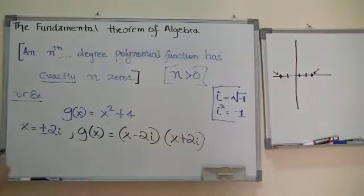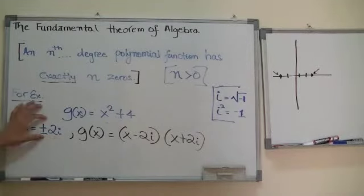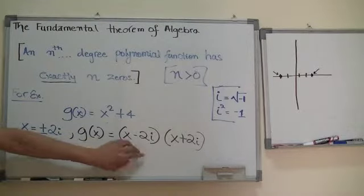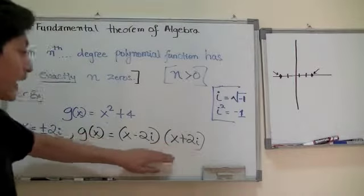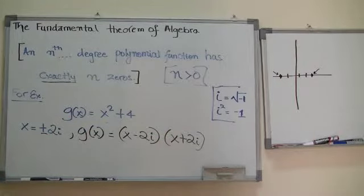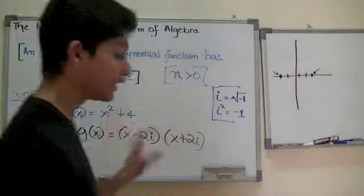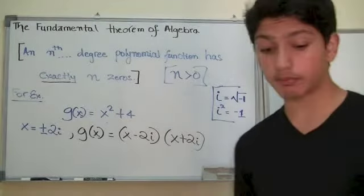Notice that we have involved x in the factored form. This is the Fundamental Theorem of Algebra — if you have plus and minus 2i, you take the minus and put it with x to get x minus 2i as the first factor, and the positive 2i gives x plus 2i as the second factor. If you try to find the values of x, you get complex numbers.